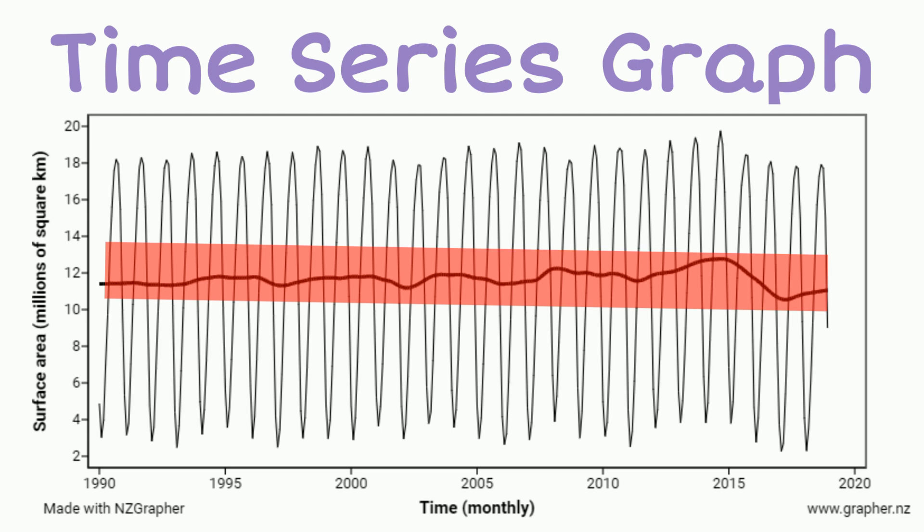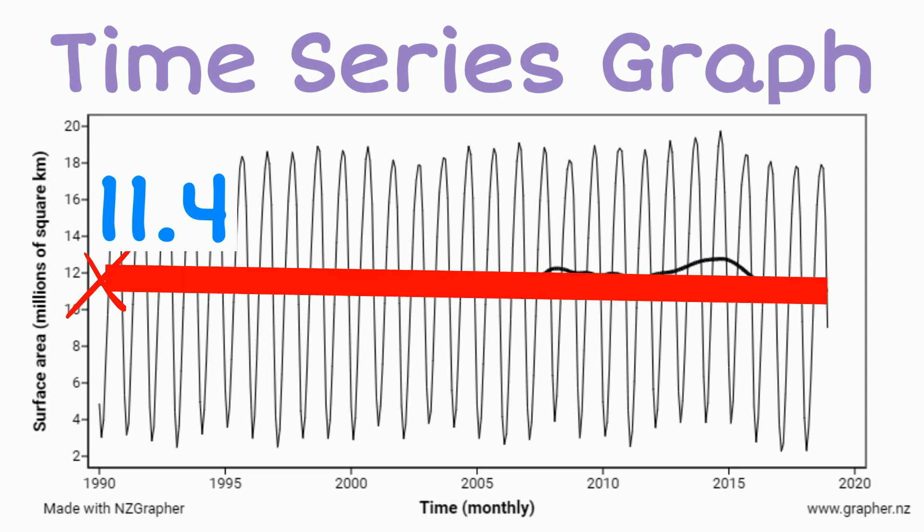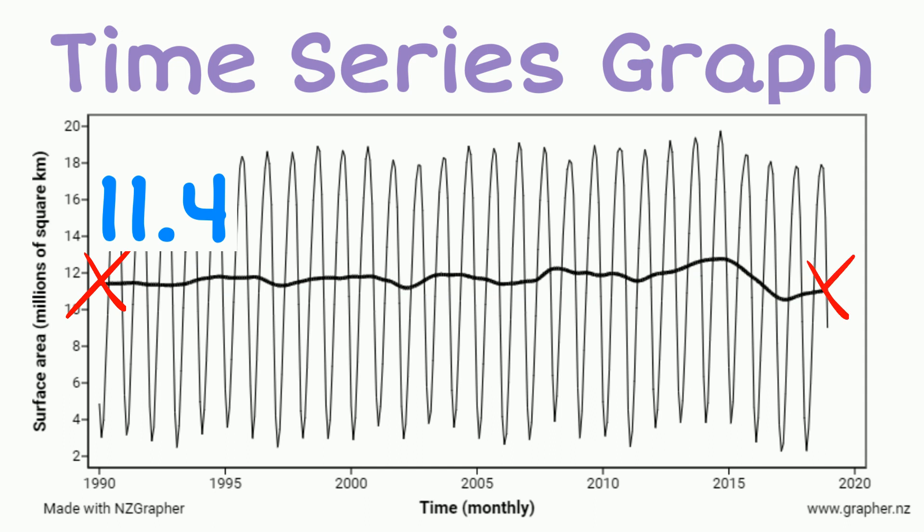So the trend value starts in January 1990 with an average surface area of around 11.4 million square kilometres. It remains fairly steady and has dropped very slightly to an average surface area of around 11.1 million square kilometres by December 2018.